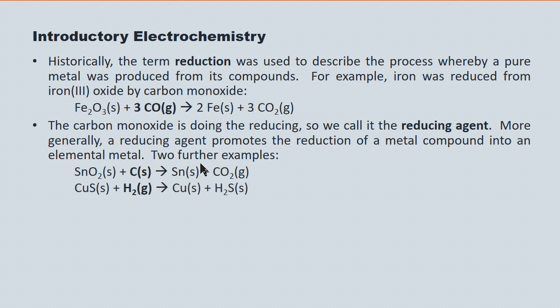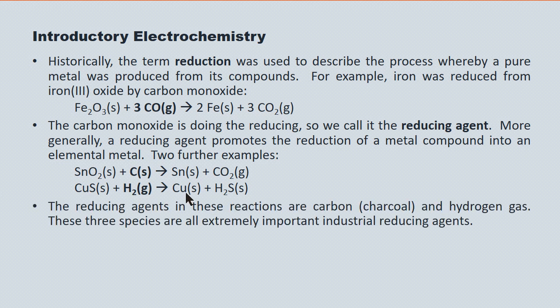Two further examples: tin(IV) oxide being reduced by charcoal into pure tin, and copper sulfide being reduced by hydrogen gas into pure copper. The charcoal and the hydrogen are important industrial reducing agents along with carbon monoxide.